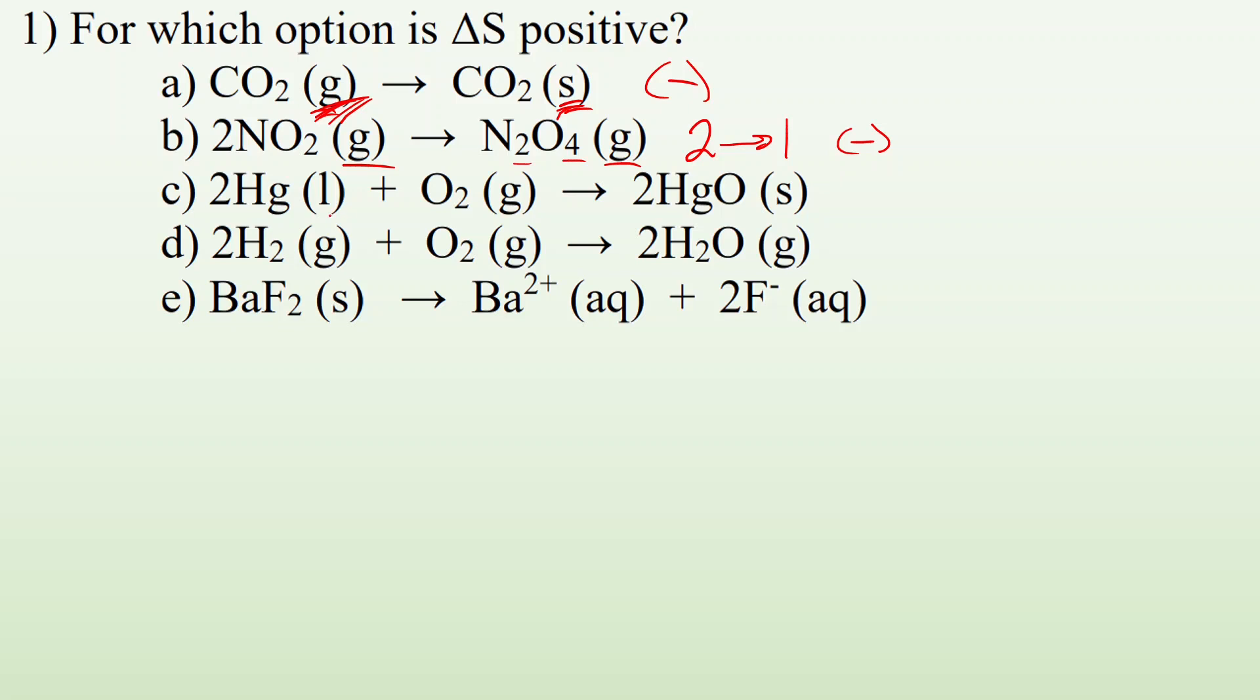All right, here we got two mercury liquids reacting with an oxygen gas giving me two mercury solids. So we have a liquid and a gas and it gives us one kind of thing as a solid. That is a definite decrease in entropy.